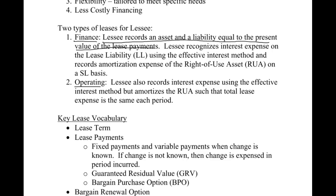The lessee will recognize interest expense on the liability using the effective interest method — this will look similar to the effective interest tables we've already done in other chapters. Additionally, we're going to record amortization expense on the asset, which is called the right-of-use asset, abbreviated RUA. That amortization is done on a straight-line basis at the end of each year.